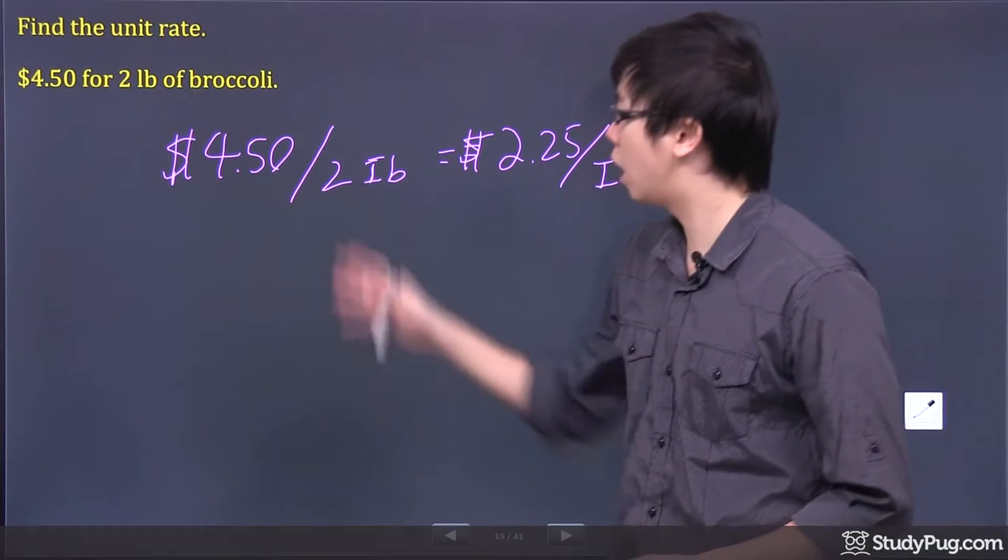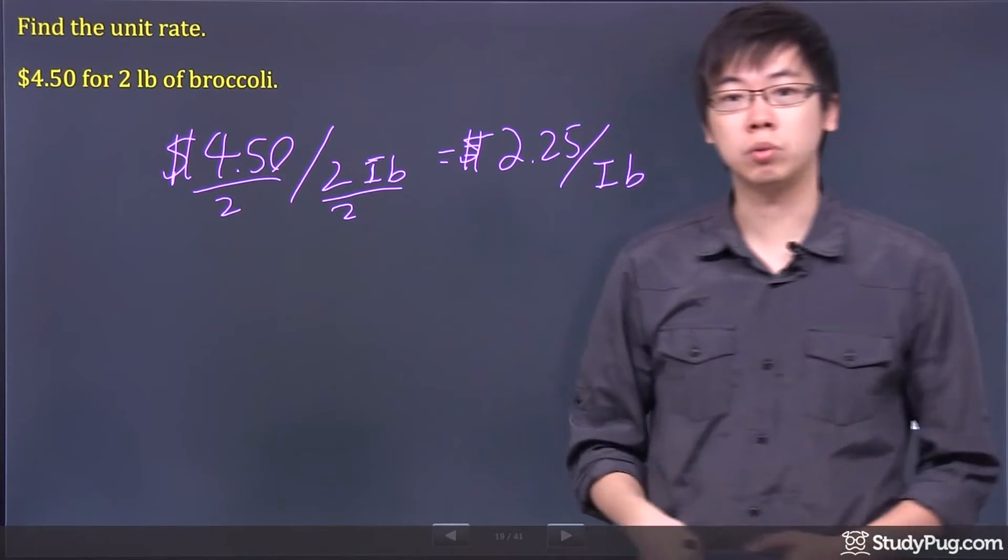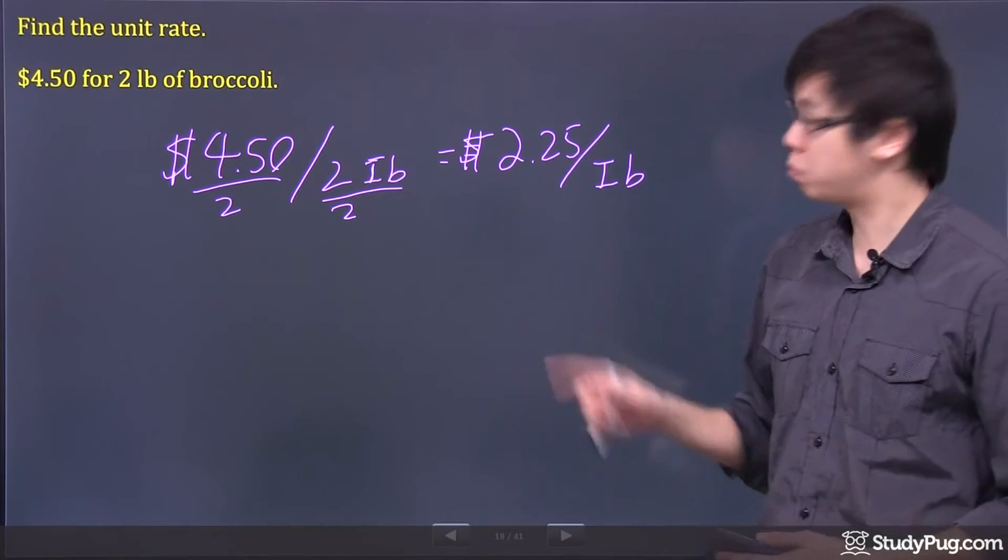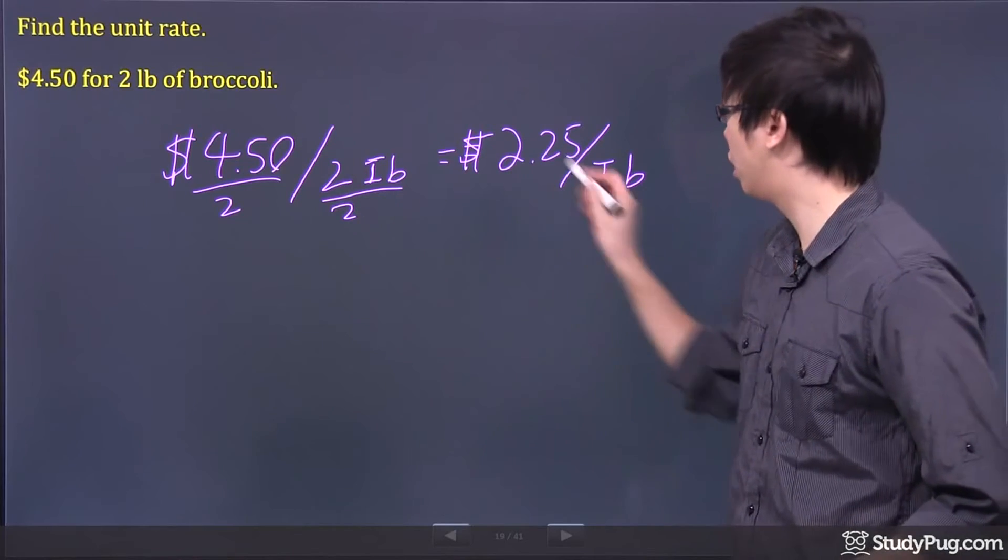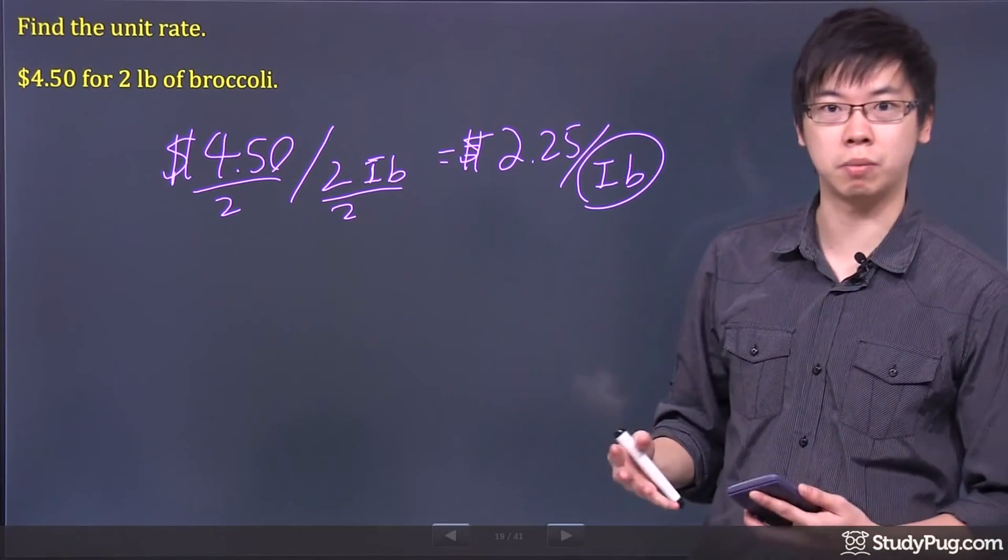Now, if you don't want to divide it that way, you can always just divide this number by two, and divide that number by two. Do the same thing to the top and bottom of the fraction. You always get the same answer. You just have to make sure it's per one thing, per pound, per item, per something.